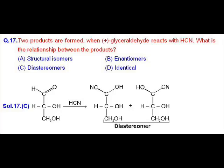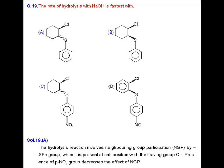When we treat plus glyceraldehyde with HCN, then we get the product in which one more asymmetric carbon is introduced and this asymmetric carbon atom will have two configurations, but the overall products will be diastereomers of each other. Question number 19.